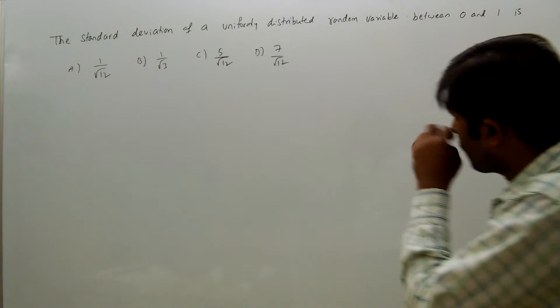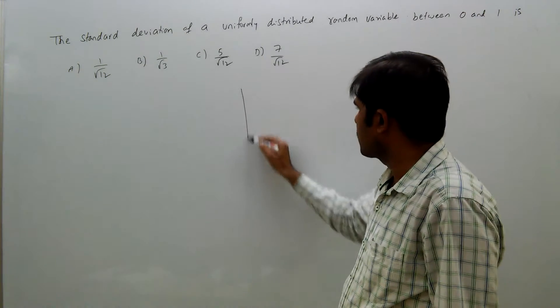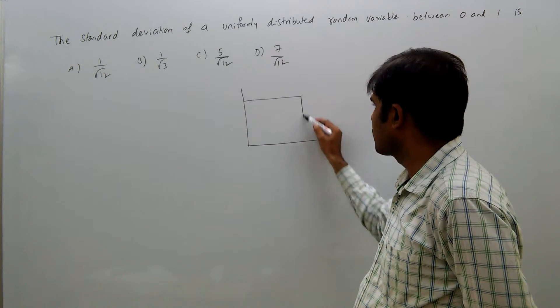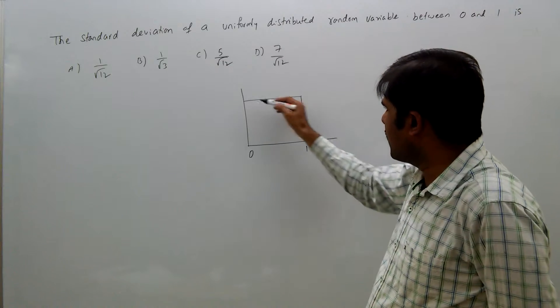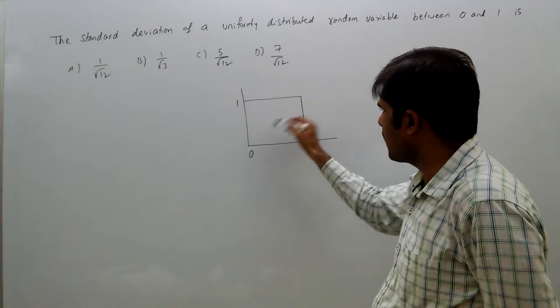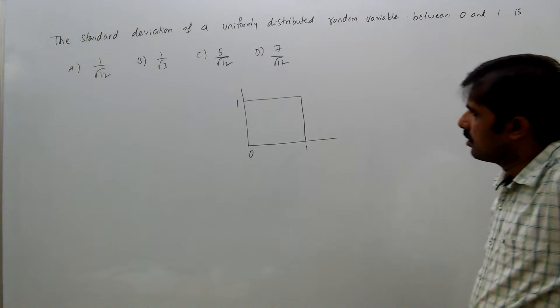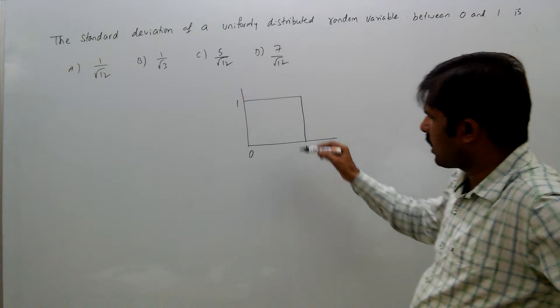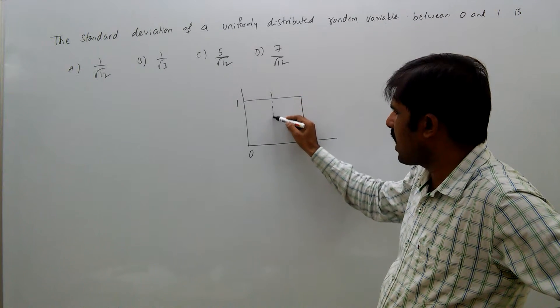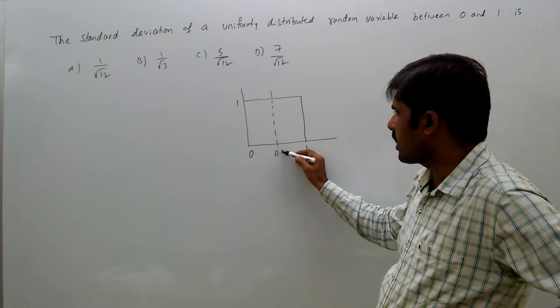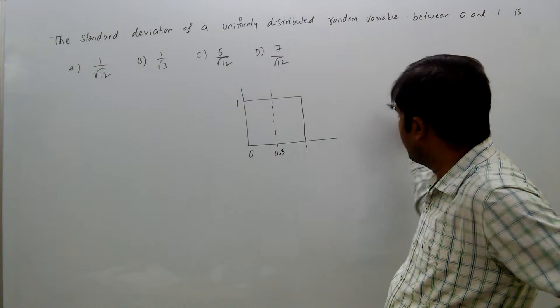First, we will see the distribution. The distribution is from 0 to 1, so the height must be 1 unit because total area must be 1. By seeing this, we can say that the mean is 0.5, exactly at the middle. So μ = 0.5.